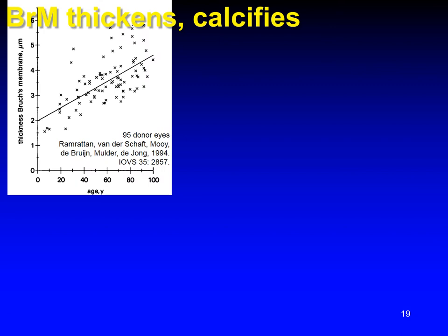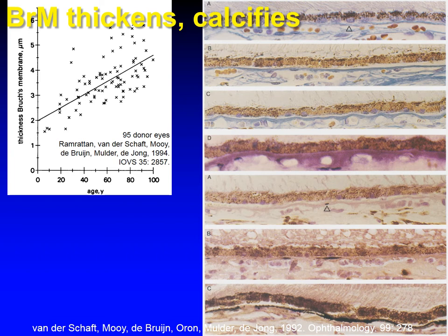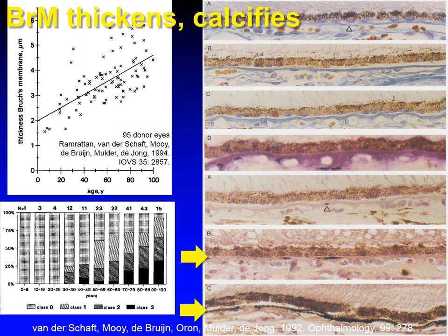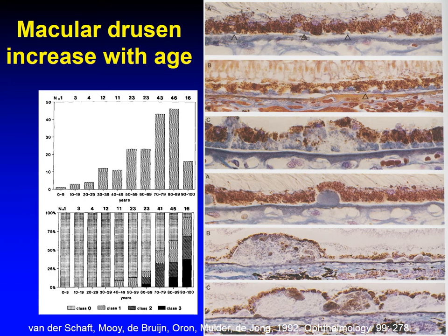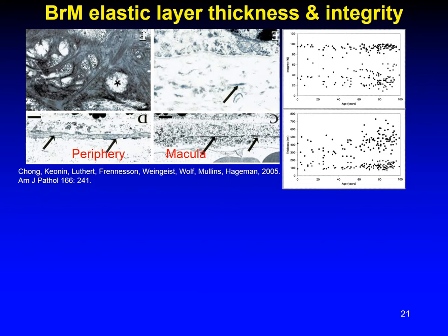Bruch's membrane is known to thicken with age. In a study of 95 donor eyes, it increased from 2 to 4 microns in thickness. It acquires patches of calcification shown by a von Kossa stain, confirmed with microanalysis and assessed using a semi-quantitative grading system. In the macula, drusen also increase with age. The two main types are hard, which have straight sides and solid contents, and soft, which have sloping sides and looser contents. These may be confluent.